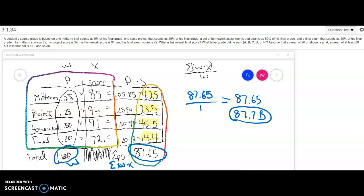The problem can also be done without using a table. And you could just simply write, for midterms we have 0.05 times 85 plus 0.25 times 94 plus 0.50 times 91 plus 0.20 times 72.